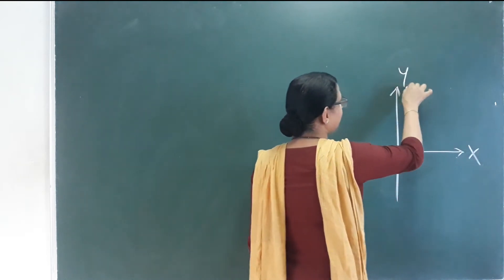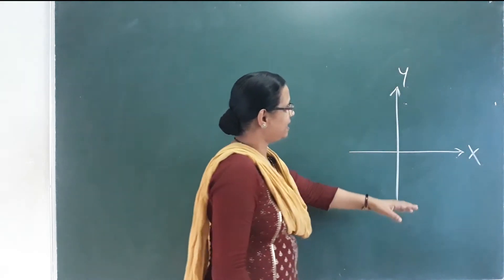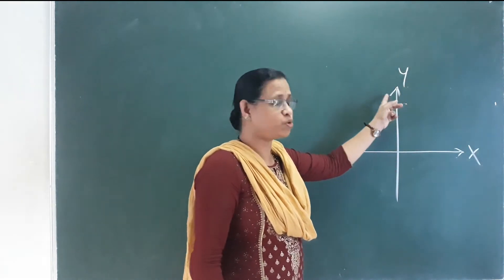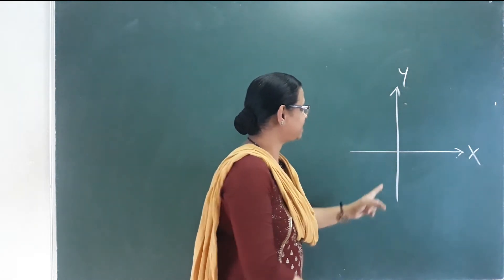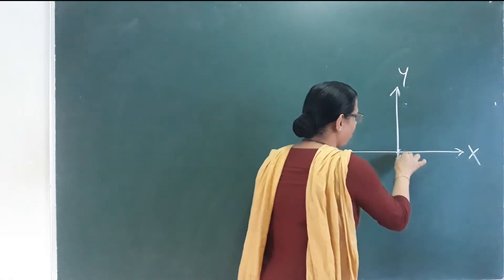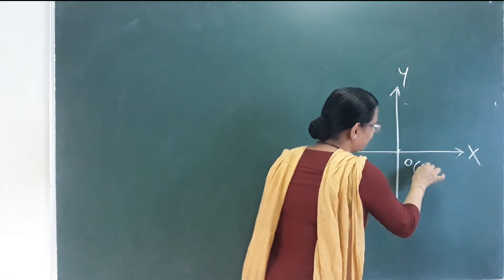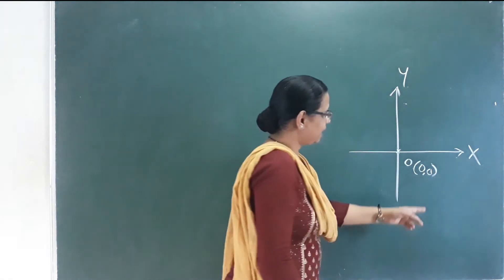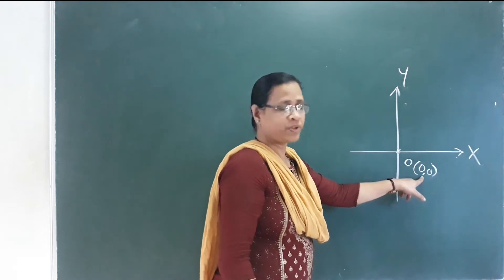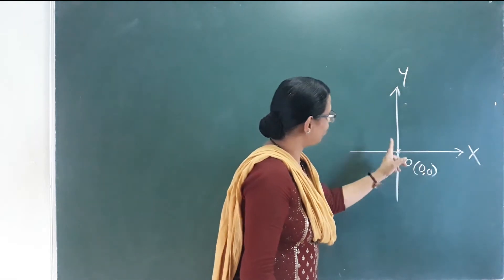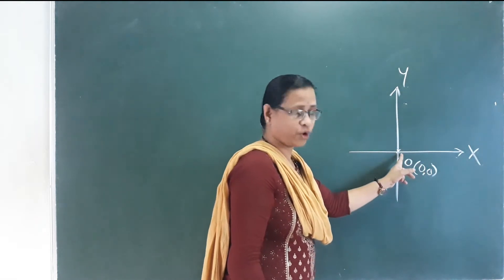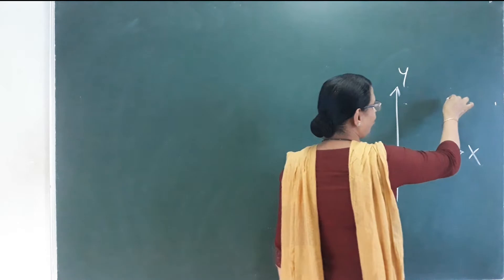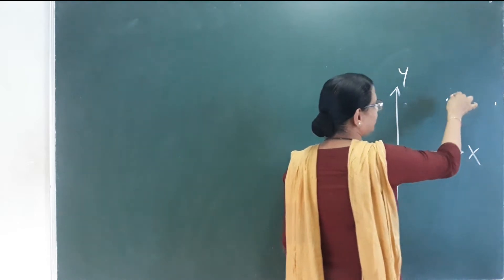This is the X-axis and this is the Y-axis — the X-axis and the Y-axis mutually intersect. This point is the origin. What is the origin? At the origin, X is zero and Y is zero.